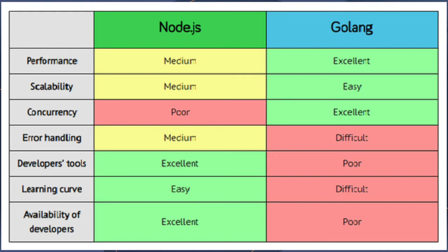Now let's understand why we chose Golang. Any server can be chosen, but since it is a write-heavy operation and we may also need async mechanisms in the future, we compared the most popular options — Node.js and Golang. Due to three key factors — performance, scalability, and concurrency — Golang is better and has been selected as our server for API development.